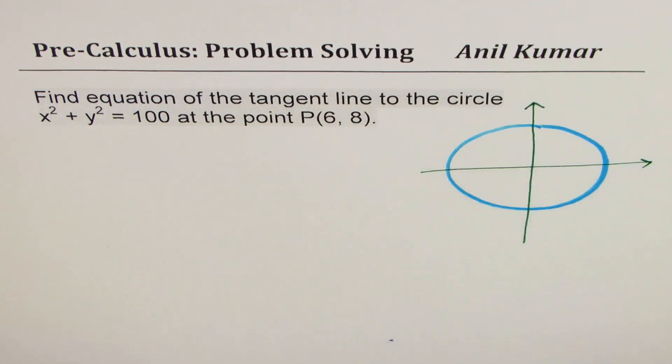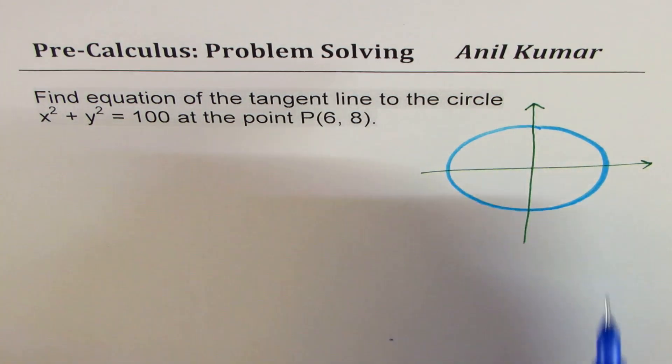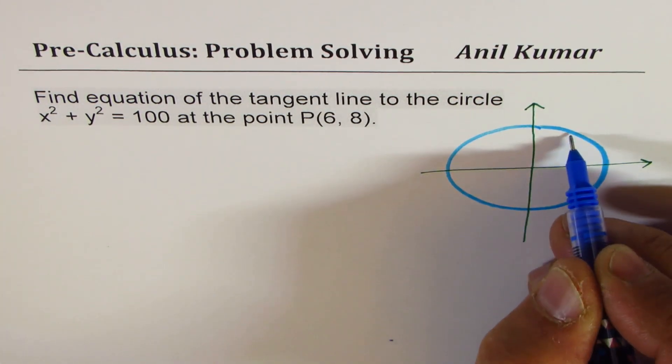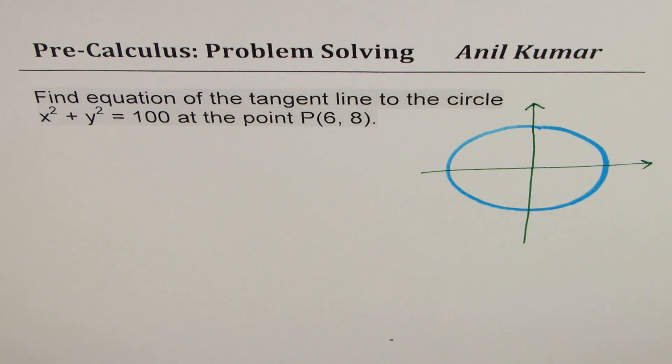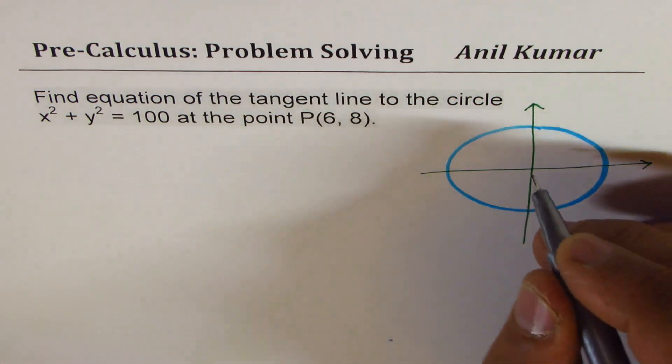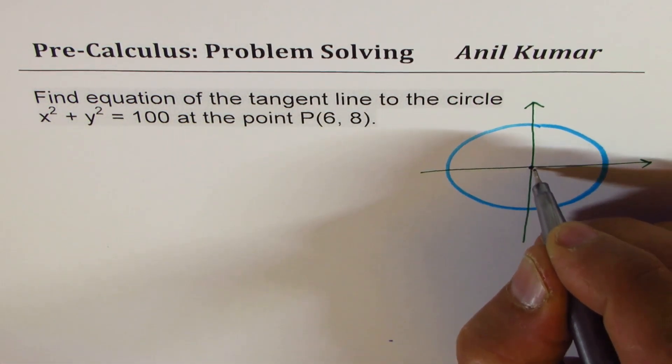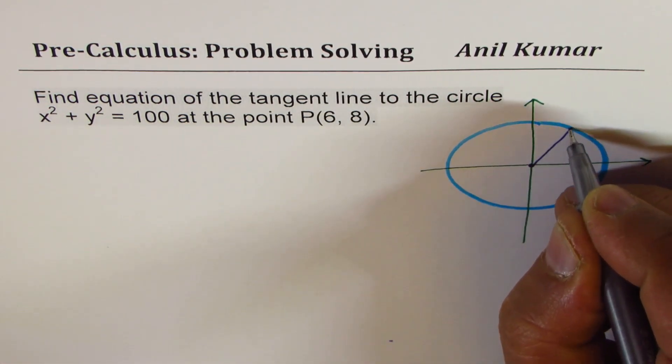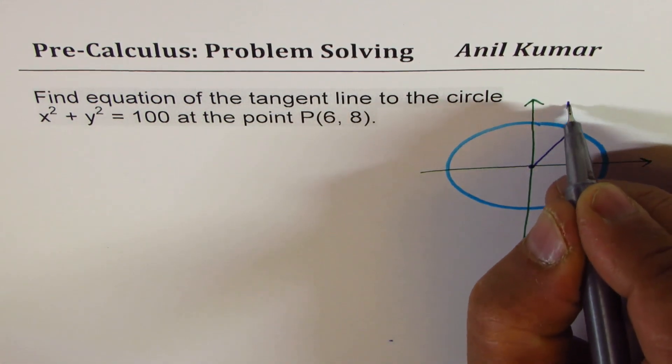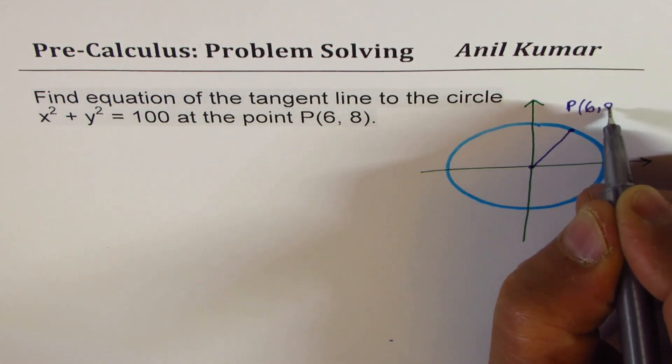So that becomes a circle centered at origin. We are given a point (6,8). 6 will be somewhere here, for example. 8 could be there. So let me just draw the radius of this circle in a different ink. So I'll just draw a radius from the origin to a point. And we'll call this point as point P, which is (6,8). Do you see that?